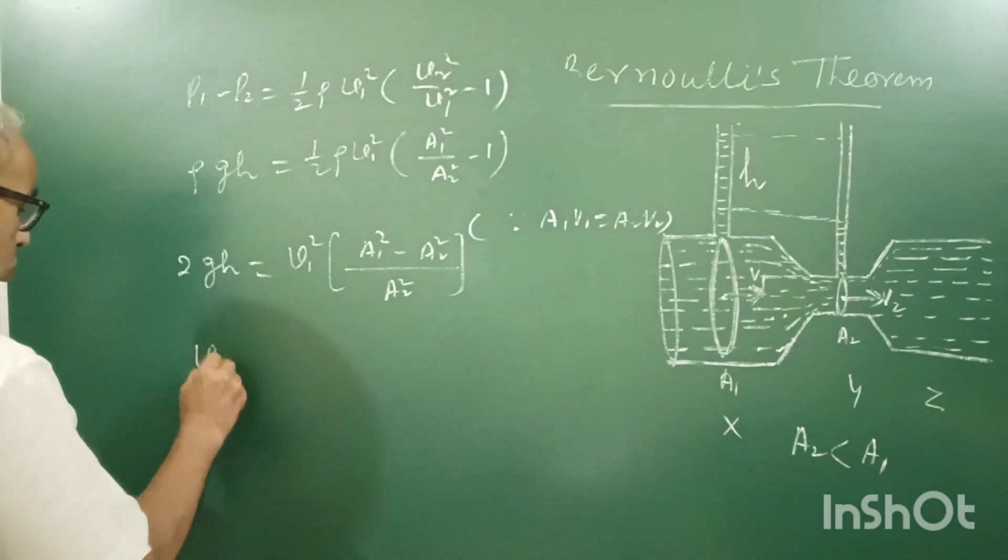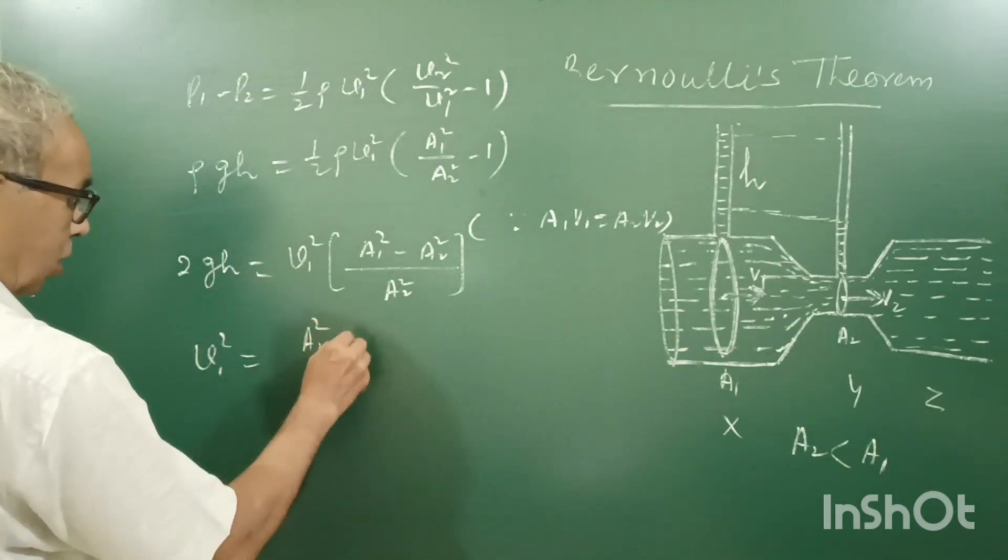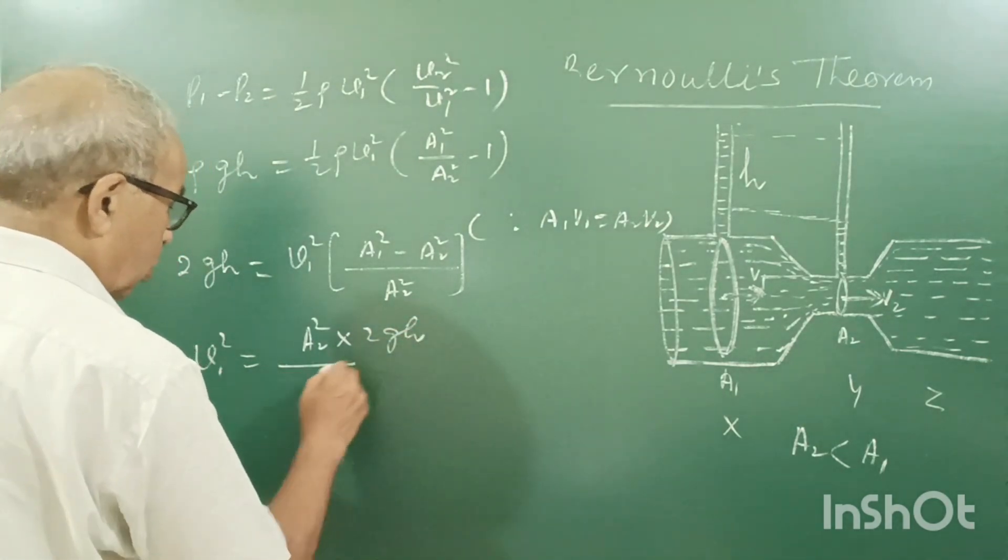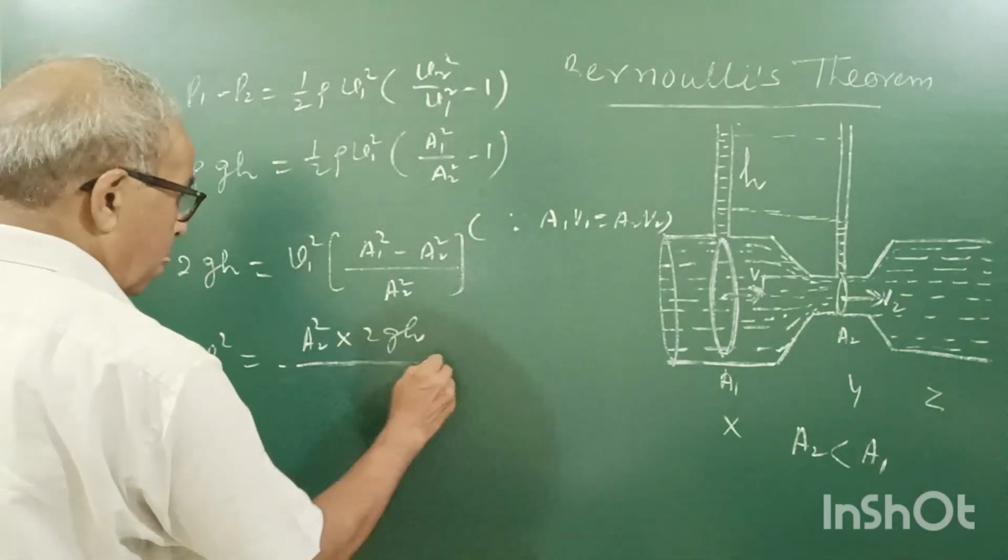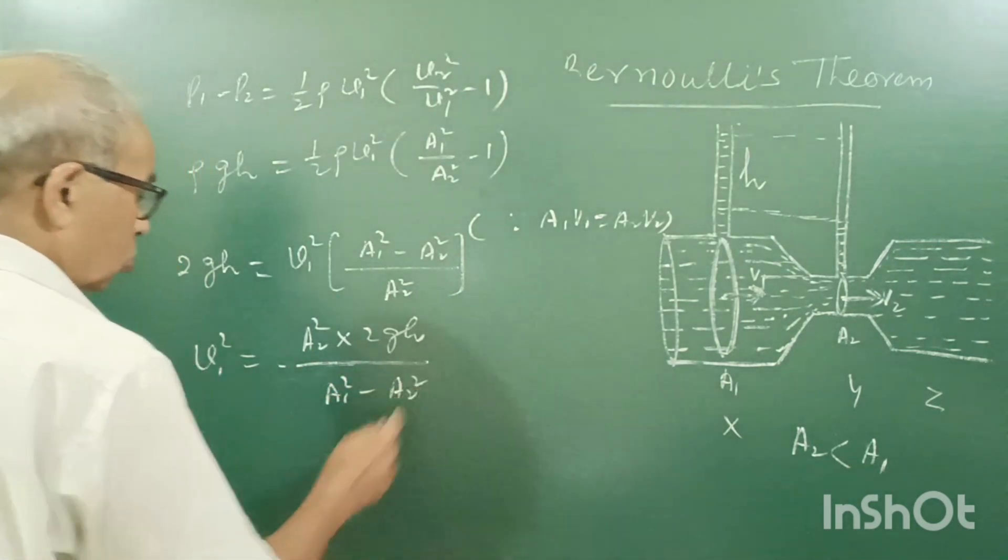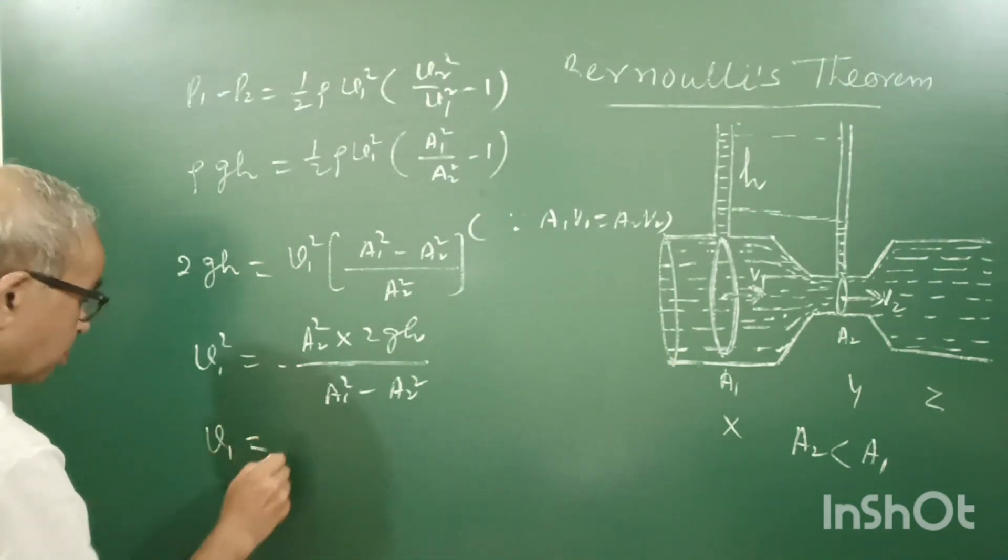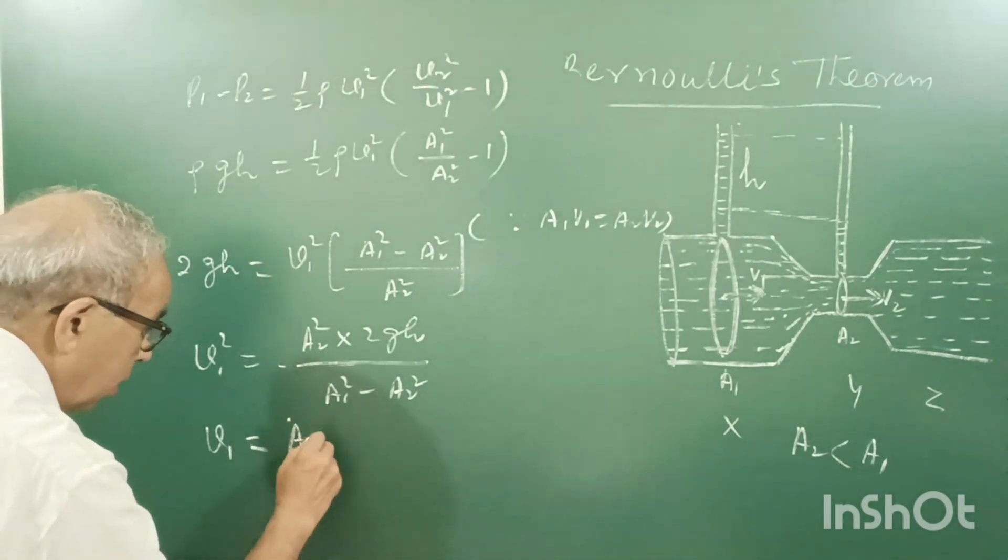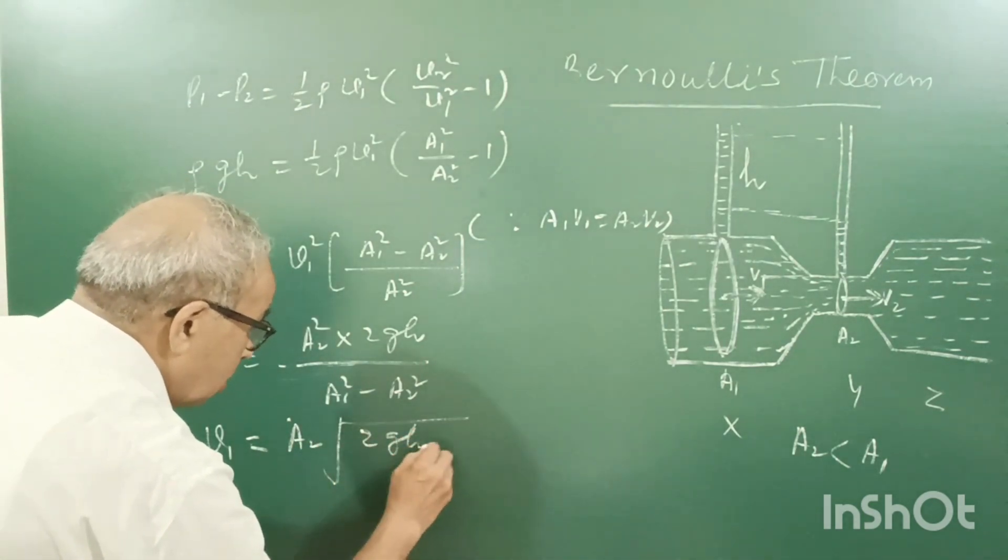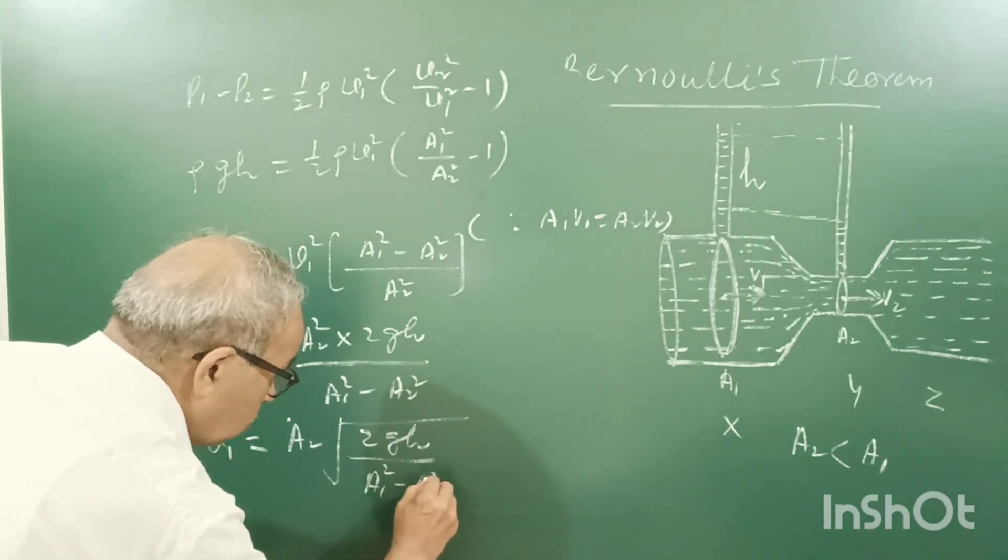Or V1 square is equal to A2 square into 2Gh upon A1 square minus A2 square. Or V1 is equal to A2 square root of 2Gh divided by square root of A1 square minus A2 square.